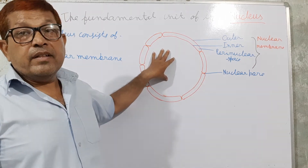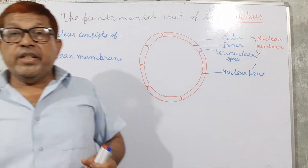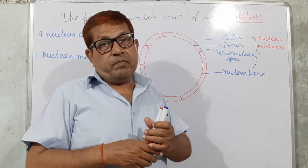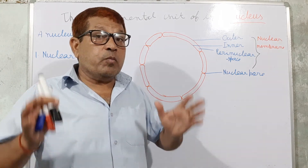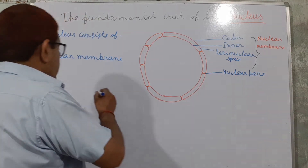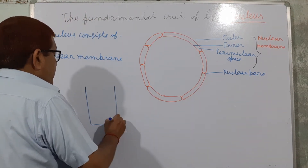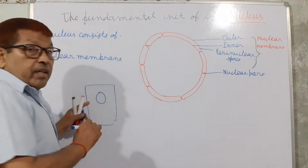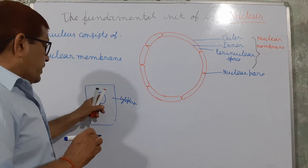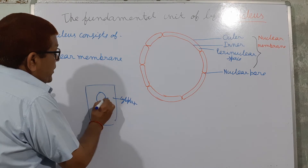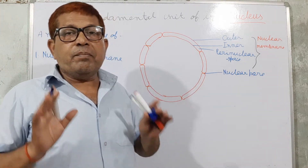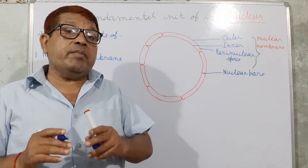This nuclear membrane has pores, and these pores are called the nuclear pore. The nuclear pore makes a cytoplasmic connection with the cytoplasm. You have studied the structure of this cell — inside the cell is the nucleus, and outside is the cytoplasm. Movement of material takes place between the nucleus and the cytoplasm via the nuclear pore.